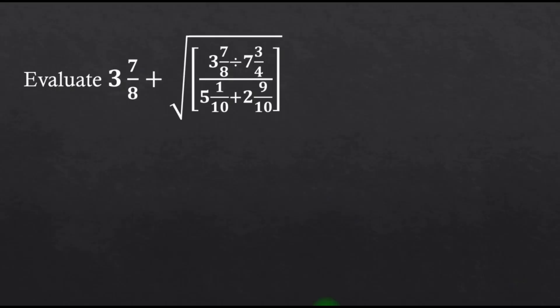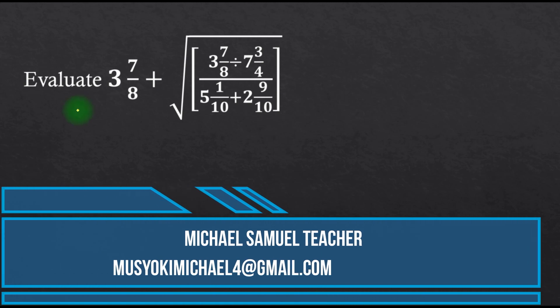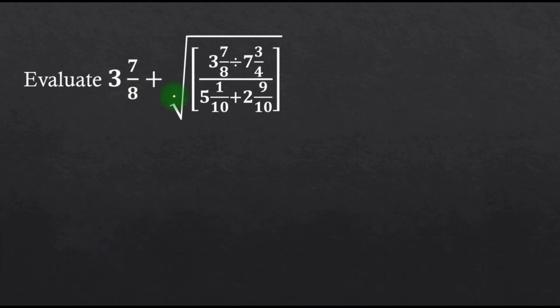My dear learners, welcome. Today we're going to look at this question on fractions. Evaluate 3 7/8 plus the square root of [3 7/8 divided by 7 3/4] all over [5 1/10 plus 2 9/10].